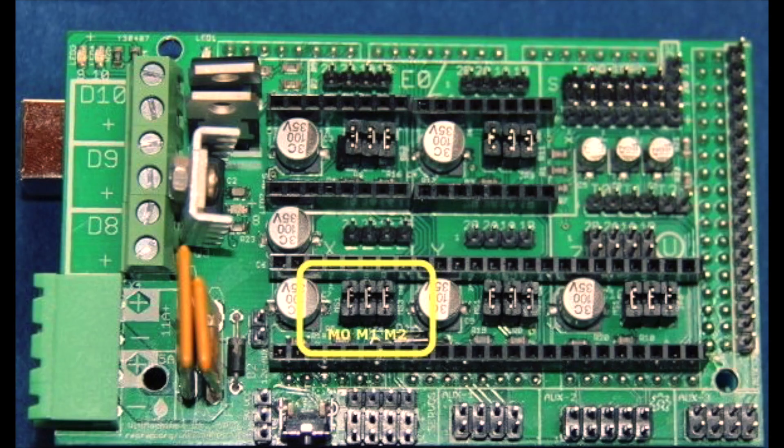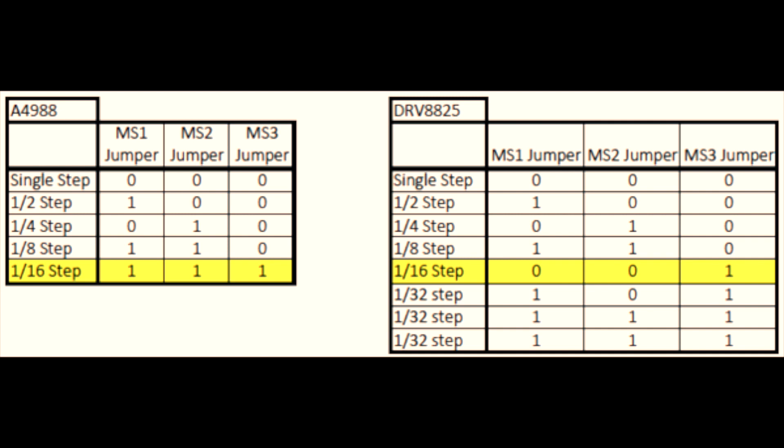As you know on a RAMPS board when you switch these pins you can change the steps, the microsteps for the stepper motor. So those pins 1, 2, 3 correspond to MS1, MS2, MS3 and based on which ones you put in you get different steps.